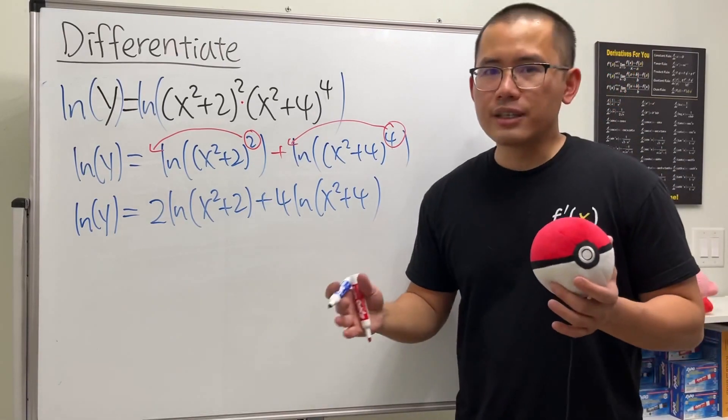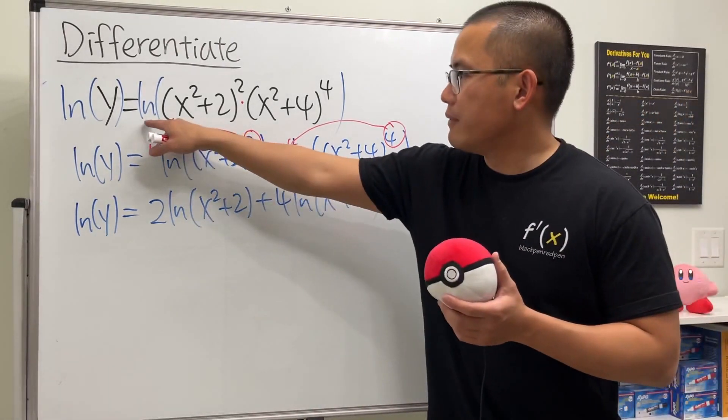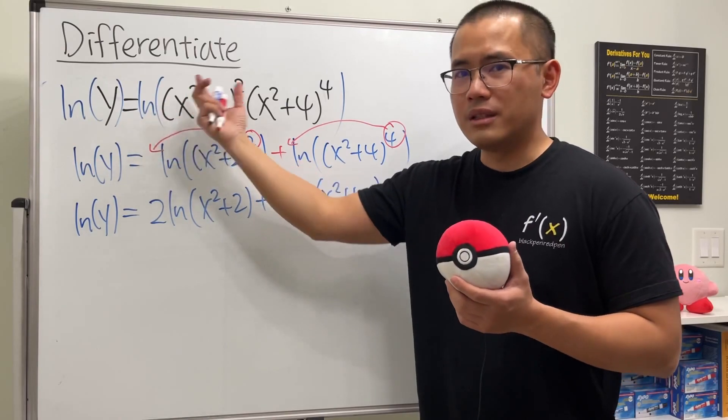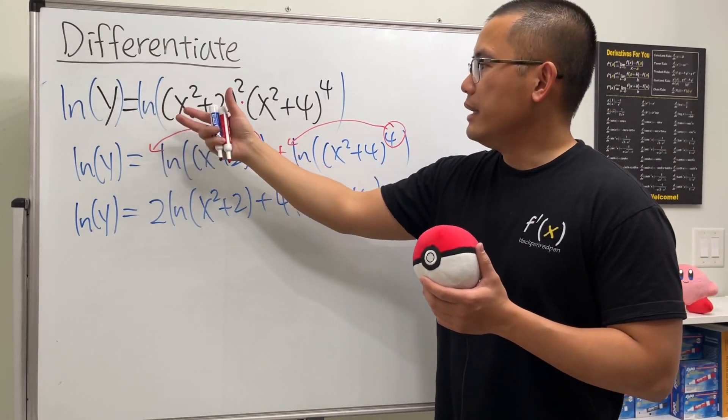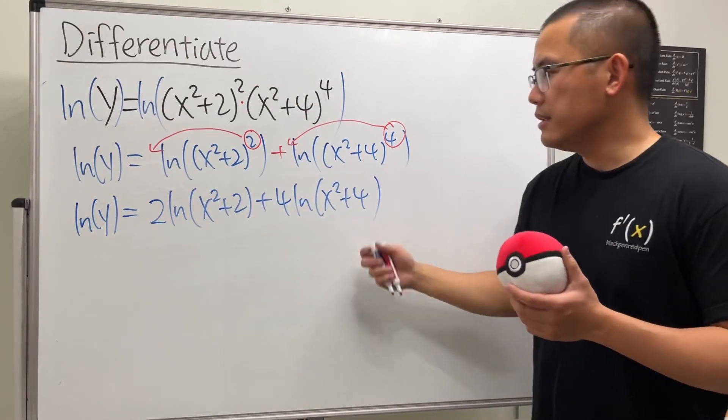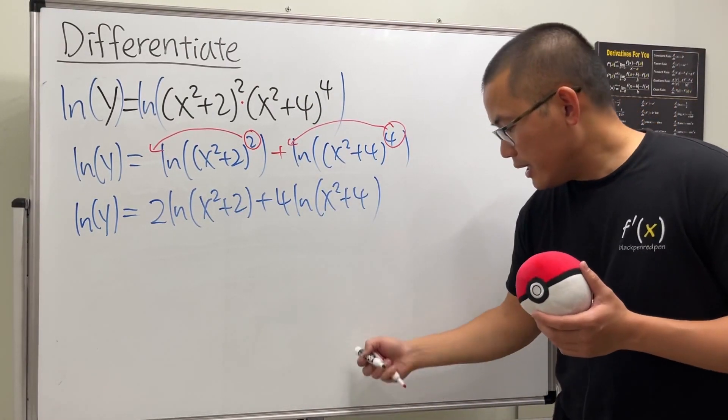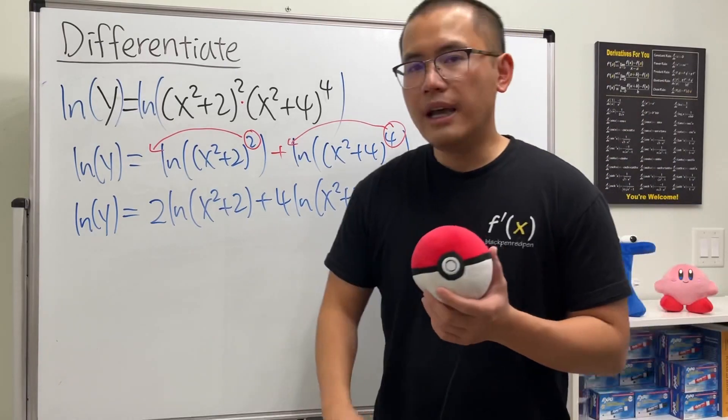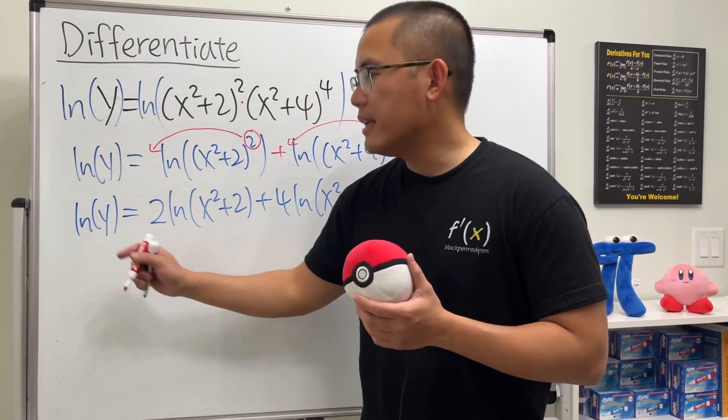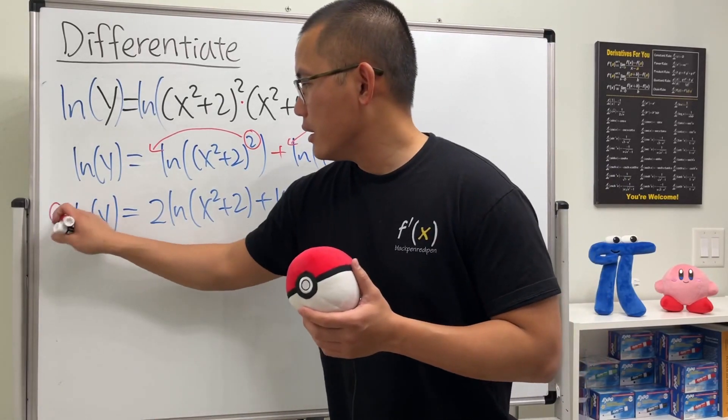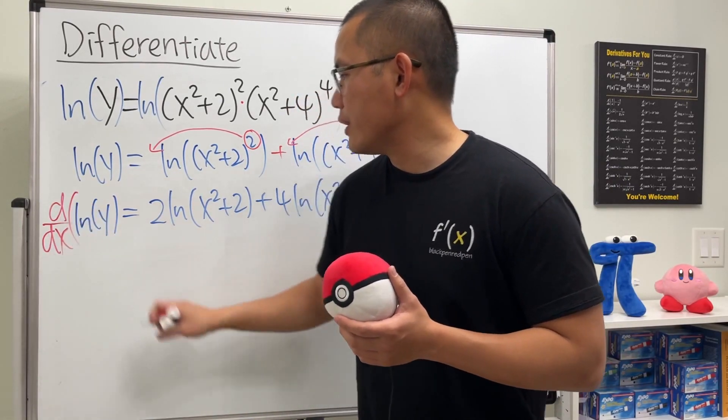So this is like the good old things that we did back in algebra, right? When we have log - well any kind of log, in this case we have ln natural log - we can expand it as much as possible like this. And we will look at this and then just take the derivative, and this right here is technically implicit differentiation because the y is no longer isolated, but it's okay we have done that before already.